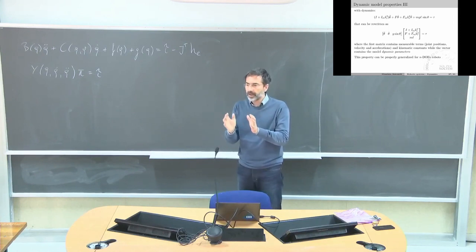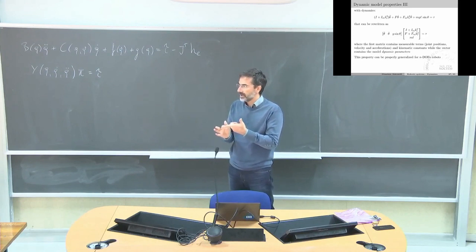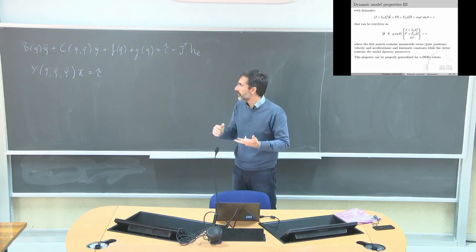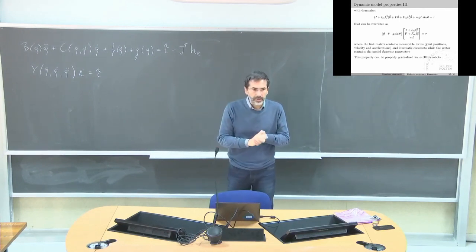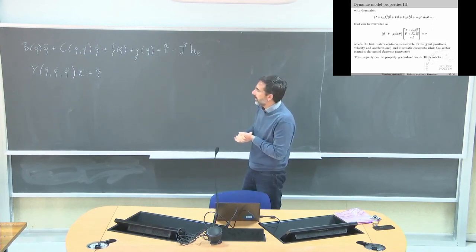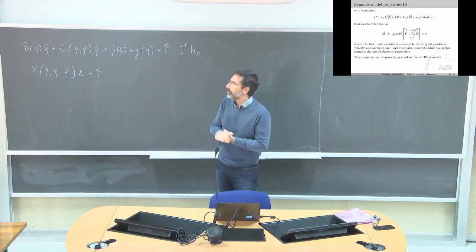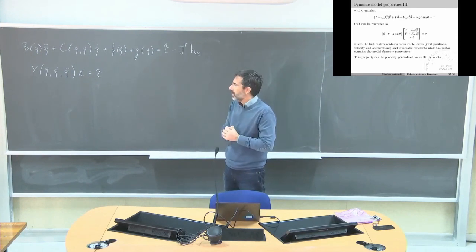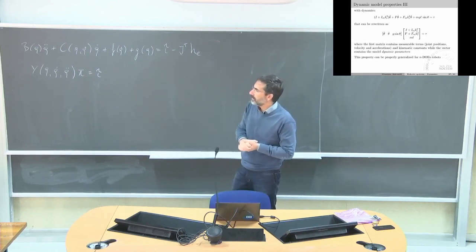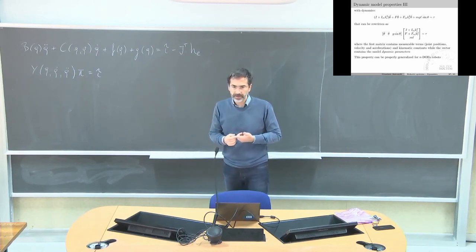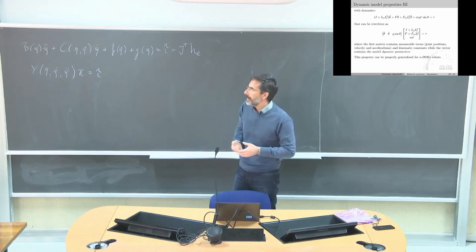Dynamic parameters are those parameters that affect the dynamics — namely mass, the first moment of inertia (the position of the center of mass weighted by the mass), and the inertia tensor for each link. Do we know those parameters? In theory yes, because we built our robot and we can measure it. But it's not always trivial because manufacturers don't necessarily give you those numbers, and when they do they may not be accurate enough. It can be better to estimate them with simple experiments in the lab.